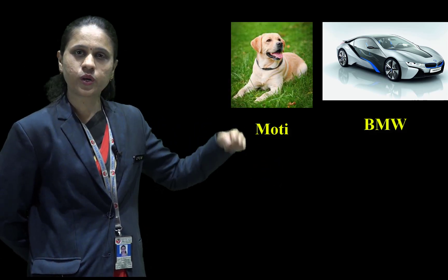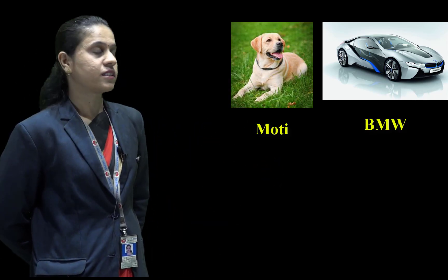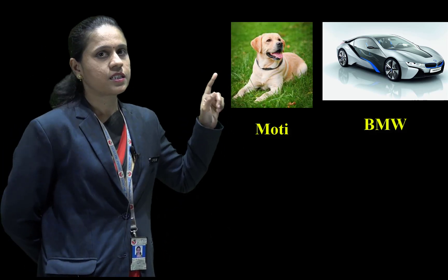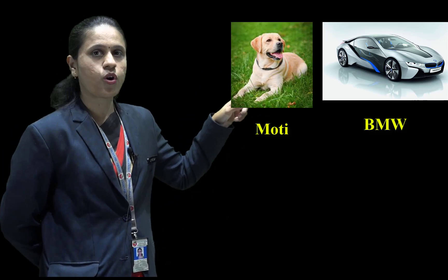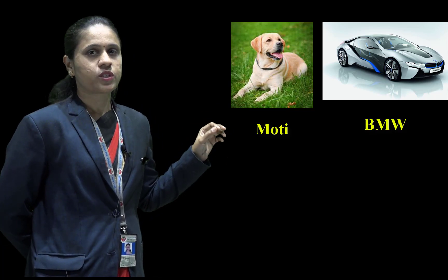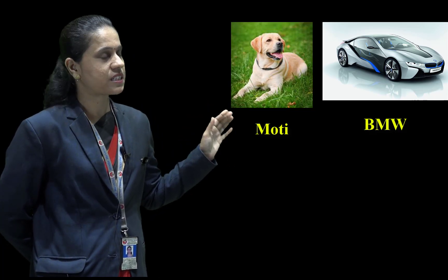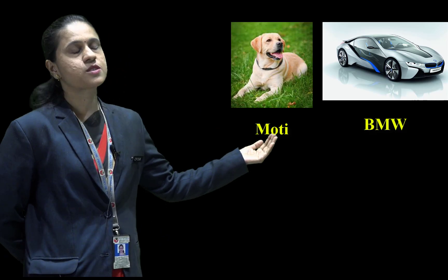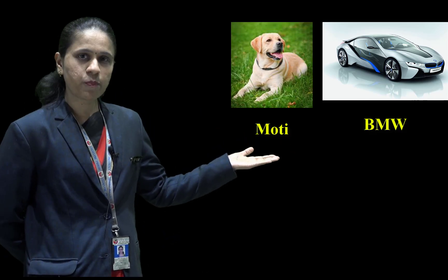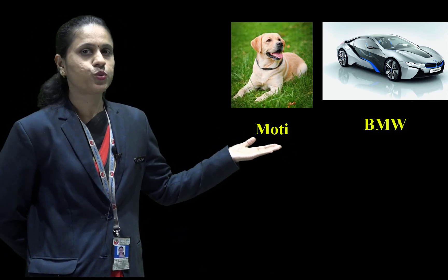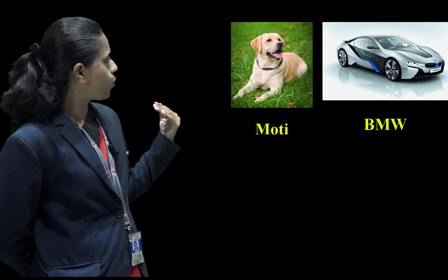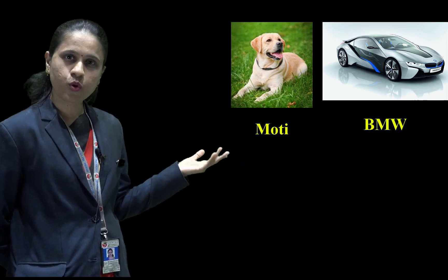And the last one is car. The special name of car is BMW. So these all special names are also called proper noun. Do you understand what is meant by common noun and what is meant by proper noun?